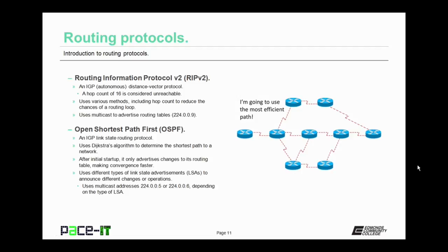Open Shortest Path First, OSPF, is the most popular IGP currently being used. It is a link state routing protocol that uses the Dijkstra algorithm to determine the shortest path to a network. After its initial startup, it only advertises changes to its routing table, making convergence much faster. It uses different types of link state advertisements, or LSAs, to announce different changes or operations. OSPF uses two multicast addresses, 224.0.0.5 or 224.0.0.6, depending upon the type of LSA that it's transmitting.